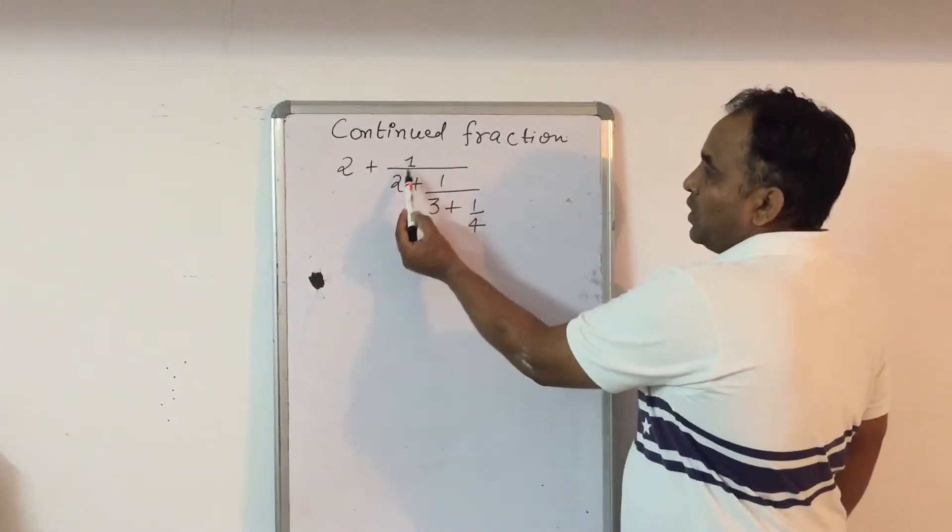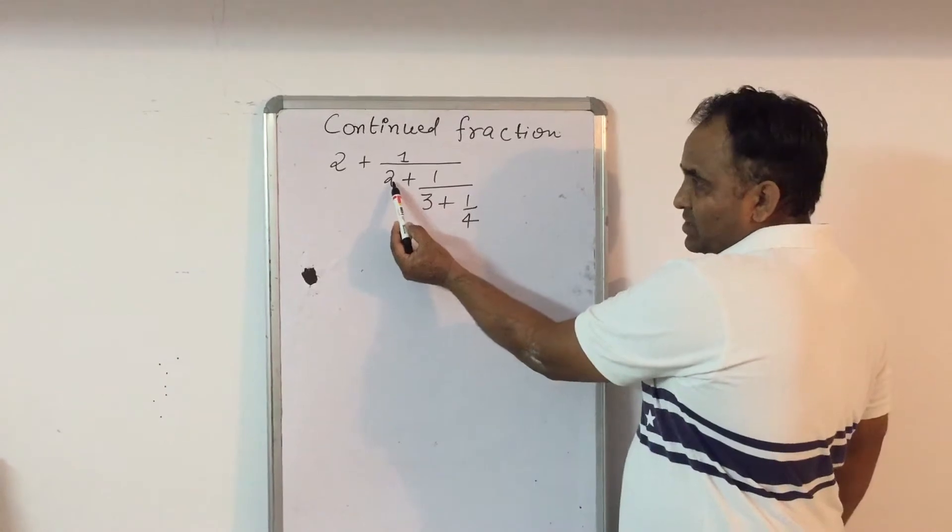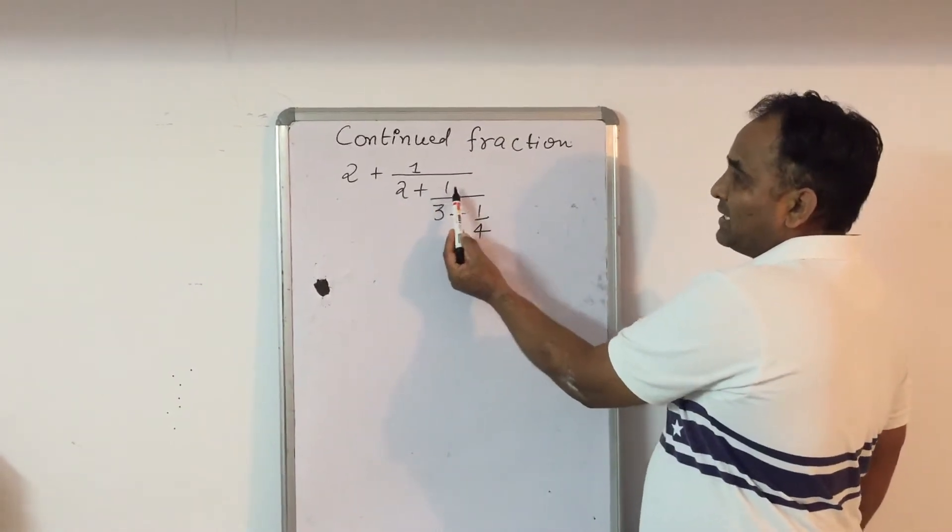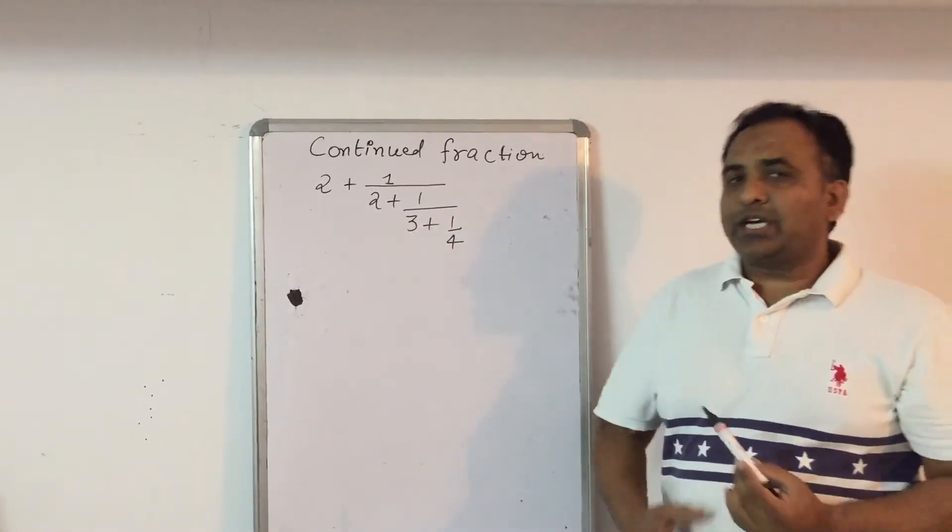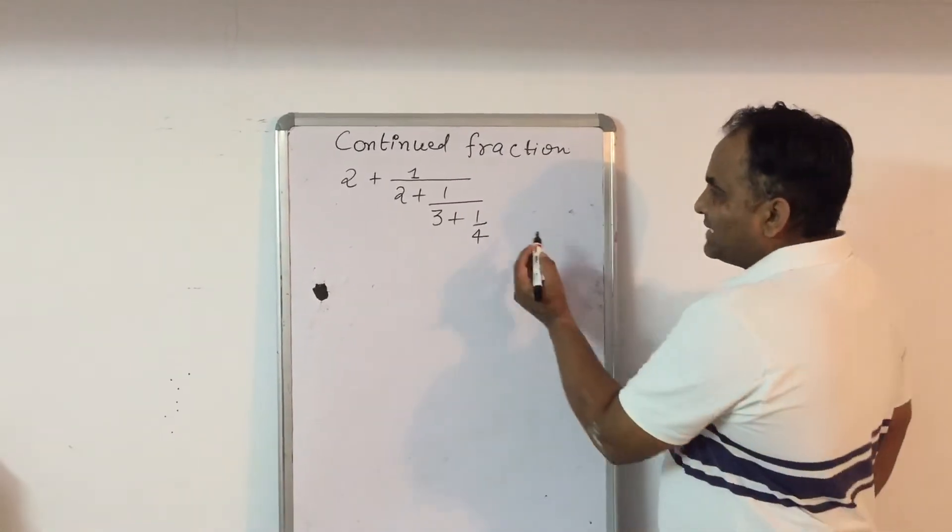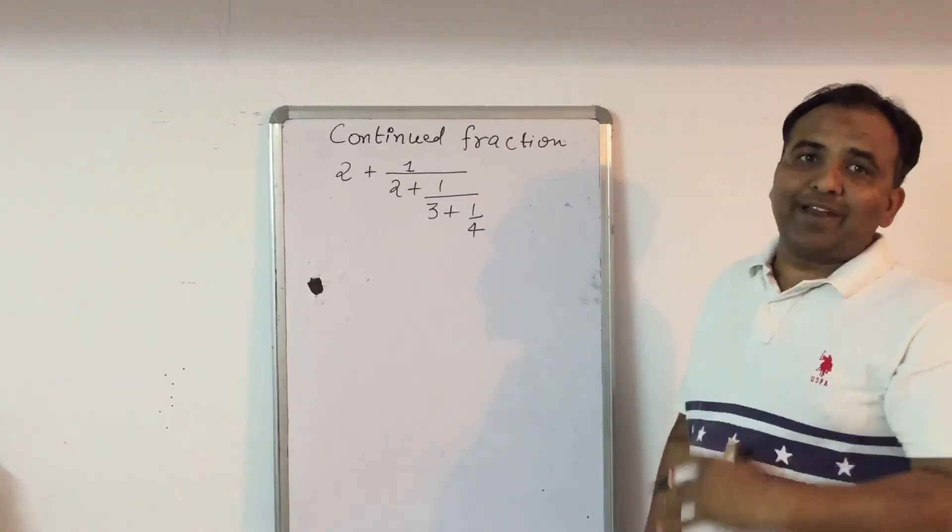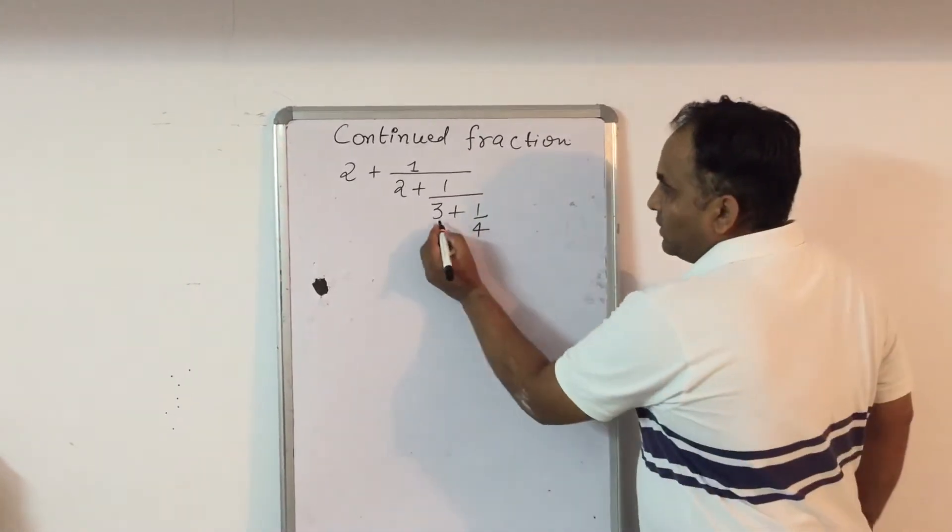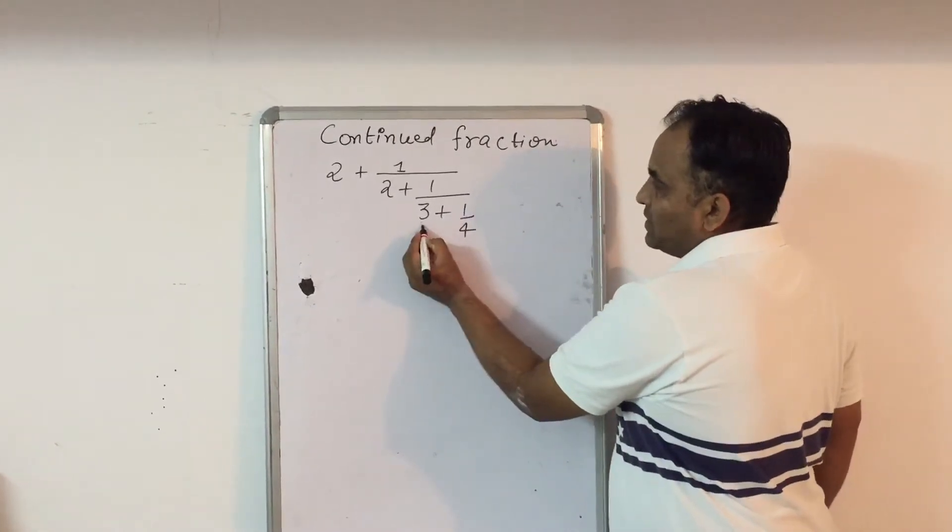For example, here you can see 2 plus 1 upon 2, and in the denominator, we are getting a fraction. So in such a case, we will look at the last fraction. For example, here we will simplify this 3 plus 1 upon 4.